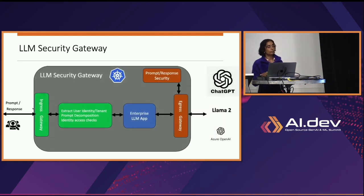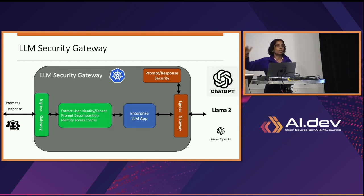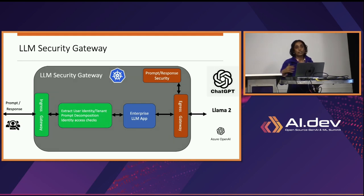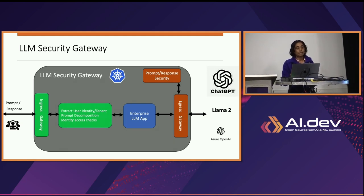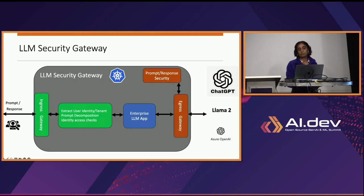Looking further into the LLM security gateway, ideally you'd have an enterprise large language model application that front-ends and talks to the actual large language model, because it can normalize between different large language models. You can do prompt engineering, maintain session tables and caches. The user talks to this enterprise LLM application. There are three broad security things you can do: identity and access management at ingress, filtering prompt requests and responses, and performing prompt-response security at egress.